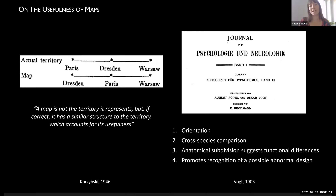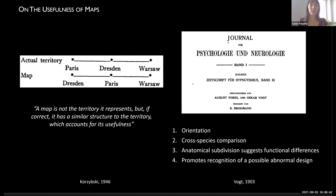Another perspective on the usefulness of maps comes from Oscar Fott. In 1903, at the beginning of an era of publications on cortical areas by himself, Cecile Fott, and Corbinian Brodmann, he set up four guiding purposes of cortical mapping: first, the map should allow quick and reliable topographical orientation; second, it should be comparable between species; third, it should have meaningful anatomical subdivisions suggesting functional differences; and finally, the map should promote recognition of possible abnormal design, which is important for clinical cases.